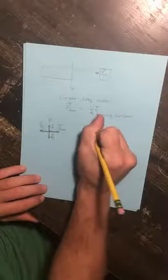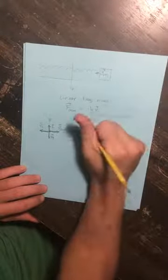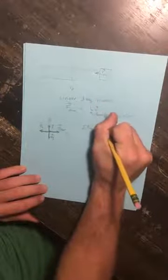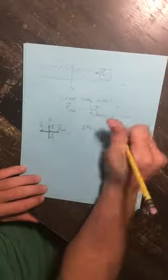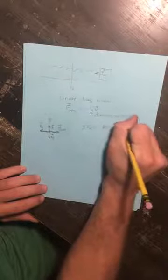We've done our free body diagram. Next step is to sum the forces. I'm going to choose in the x direction. So we have the spring force, which is going to be minus k times x. And we have the drag force, and we're going to apply our drag model. So this is going to be minus b times vx.